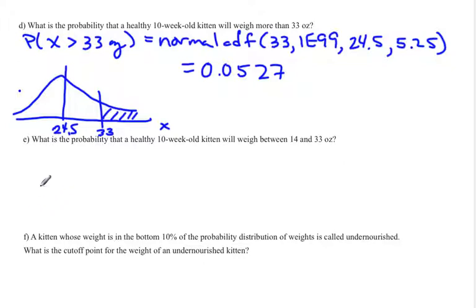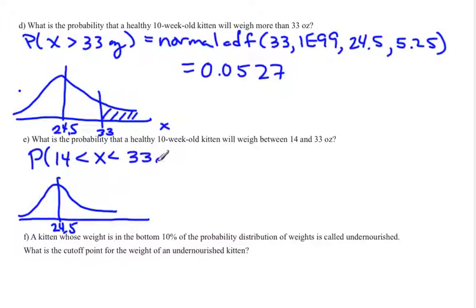The next problem asks us to find the probability that a healthy kitten weighs between 14 and 33 ounces. So we're going to draw a picture of this, and we're also going to write this in notation. So in mathematical notation, if we're between, then 14 is our lower limit, x is between these two values, and it would look something like this. So 14 is below, 33 is above, and you're shading in between because you want to be between those two.